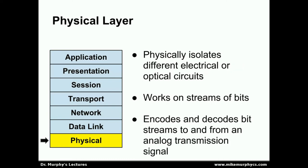An important purpose of the physical layer is to physically isolate different electrical or optical circuits from each other. Without this isolation, a malfunctioning device attached to a network could prevent the entire network from operating. The physical layer works on streams of bits and is responsible for getting groups of bits from one machine to another by encoding and decoding bit streams into an analog transmission signal. Ultimately, despite the fact that we talk about digital communications, at a physical level, all communications are done using analog signals.